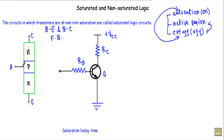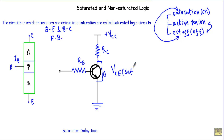Therefore, the base terminal will be flooded with minority P-type carriers, resulting in a high value of base current. When a high value of base current flows, the collector and emitter terminal will get nearly shorted and we will get a VCE saturation voltage of nearly 0.2 volts. This circuit configuration is said to be in the on state.